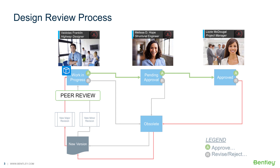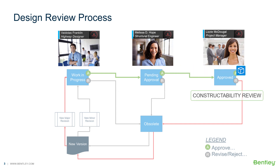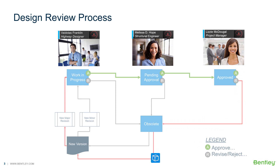To summarize: a peer review will occur while the document is flagged as work in progress. A cross-discipline review will occur while the document is flagged as pending approval. A constructability review will occur once the document is flagged as approved. If a revision is needed, the current version needs to be designated as obsolete, and the new version gets designated as work in progress to restart the cycle.